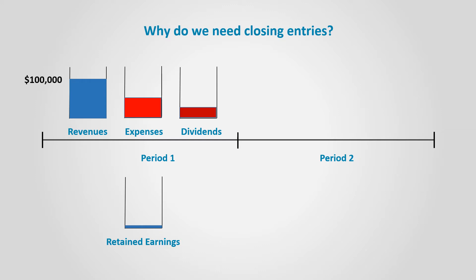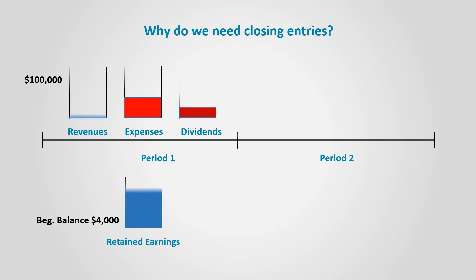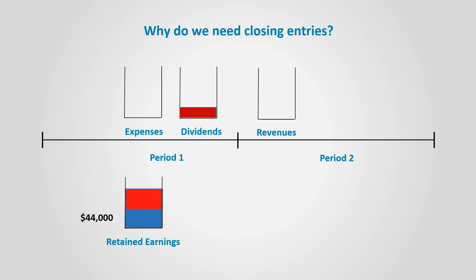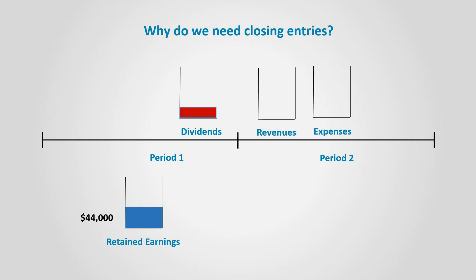Assume that we have $100,000 of revenues and $4,000 remaining in the retained earnings at the beginning of the period. When the revenues are added to the retained earnings, its balance increases to $104,000. The expense accounts are also moved to retained earnings, but they will decrease it. So if we assume $60,000 of expenses, it will move to retained earnings to decrease it to $44,000. The expenses are then reset and are ready to start accumulating expenses for the new period.